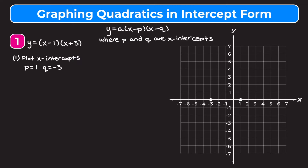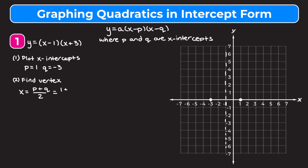Now we want to find our vertex. The vertex is going to be right in the middle of our two x-intercepts. You may be able to tell visually that negative one is right in the middle of negative three and one. So our axis of symmetry is going to be at negative one, which means the x-coordinate of our vertex is at negative one. I'll show you how to do it algebraically as well. To find the x-coordinate of the vertex in intercept form, we take the sum of p and q and divide it by two — basically the average of our x-intercepts. So we do our p value of one plus our q value of negative three.